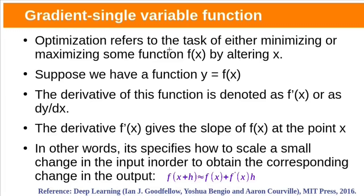Most deep learning algorithms involve some sort of optimization. Optimization means minimizing or maximizing some function f(x) by altering the input variable x. Suppose we have a function y = f(x). The derivative of this function is denoted as f'(x) or dy/dx. The derivative f'(x) gives the slope of f(x) at that point x — in other words, the derivative specifies how to scale a small change in input in order to obtain the corresponding change in output.